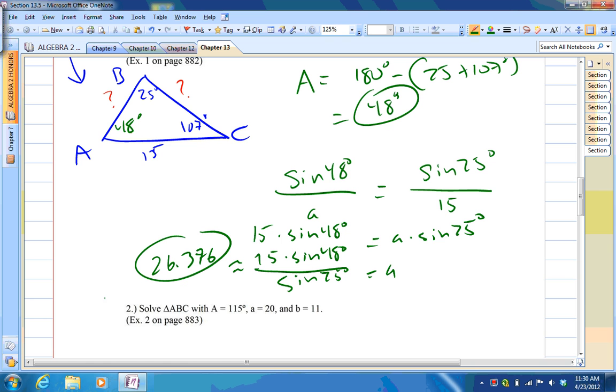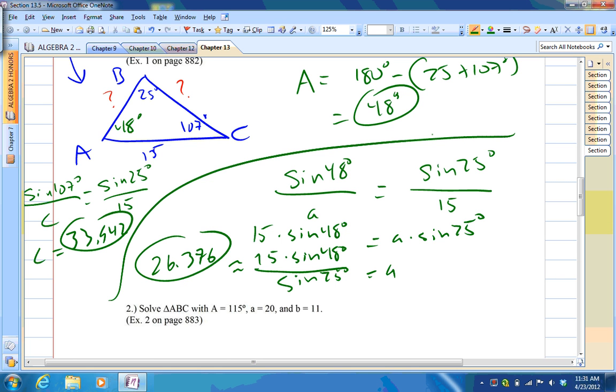And then to get side C, didn't leave myself enough space here. So, sine of 107 degrees over C will equal sine 25 degrees over 15. Or you could say sine 48 degrees divided by 26.376. It doesn't really matter. You might want to pause the video right now and work it out and see if you get the same answer. I trust you'll do this. I'll actually do it right now myself. So, you should have got 33.942. So, we have the triangle solved.